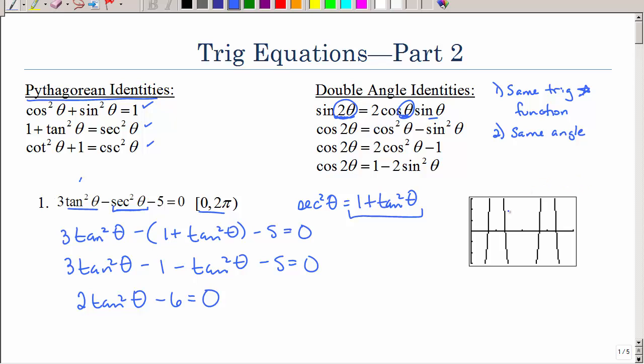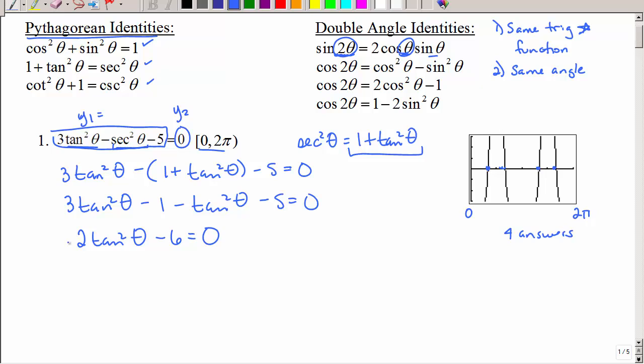And now my equation looks a little bit easier. Now, over here on the graph, I've graphed from 0 to 2π and I went ahead and graphed this equation under y1 equals and then, of course, this is y2. Where do I want to see where those intersect? It looks like I should have four answers when I get done. Let's see if we can get there. Now that we've changed it to all tangents, this equation should be very similar to something we worked previously. So let's isolate this variable by adding 6 and dividing by 2. So we would get tangent squared θ equals 3. Then, of course, we need to take the square root of both sides.